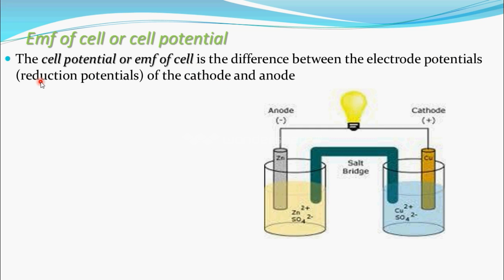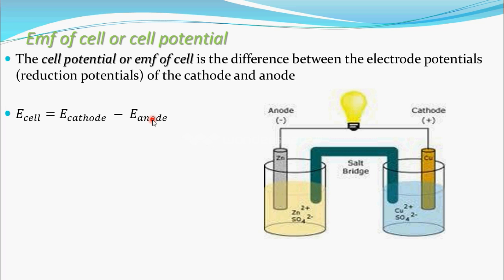I will explain what reduction potential means in the next video. The EMF of the cell, or cell potential, is equal to the electrode potential of the cathode minus the electrode potential of the anode — that is, EMF of cathode minus EMF of anode.